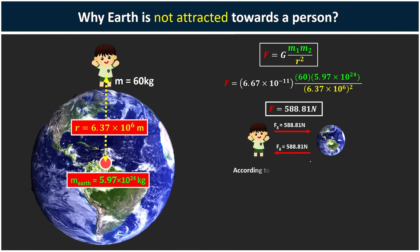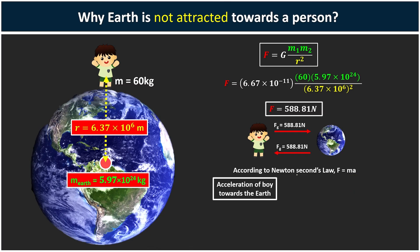According to Newton's second law of motion, F equals ma. If we divide both sides by m, we find acceleration equals force divided by mass. So to find the acceleration of the boy towards the Earth, substituting the force as 588.81 and the mass as 60 kg, the boy is accelerating towards the Earth with an acceleration of 9.81 meters per second squared.